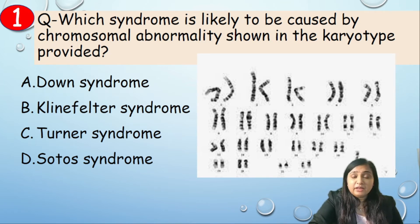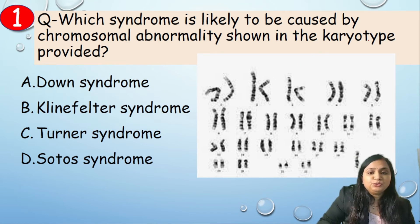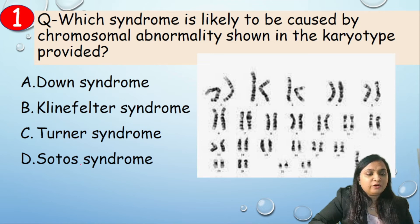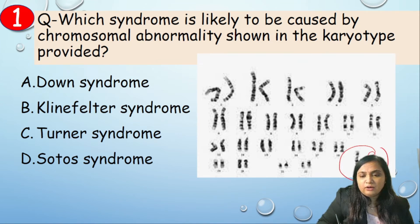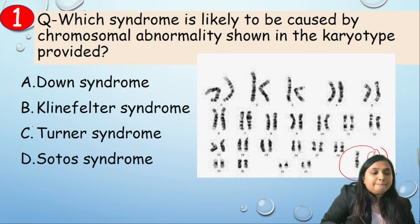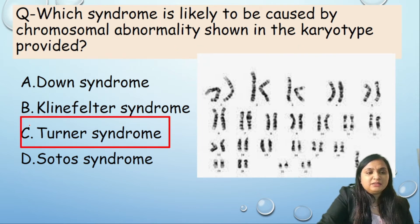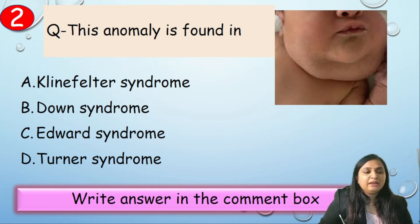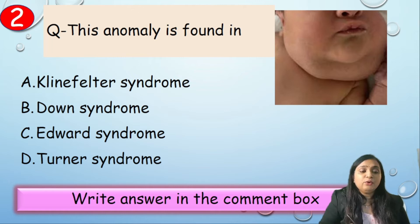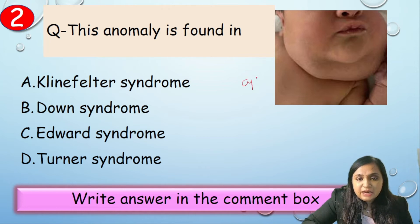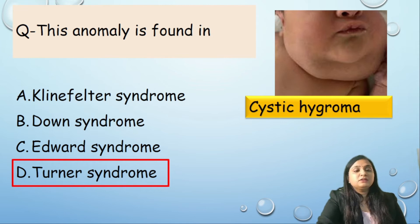Now for image-based MCQs. Question 1: Which syndrome is caused by the chromosomal abnormality shown in the karyotype? Options: A) Down syndrome, B) Klinefelter syndrome, C) Turner syndrome, D) Sotos syndrome. In the image, one chromosome of the pair is missing — so the correct answer is C, Turner syndrome. Question 2: This anomaly — cystic hygroma — is found in which syndrome? Options: Klinefelter, Down, Edward, or Turner syndrome. Correct answer is D, Turner syndrome.